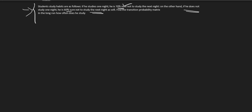Find the transition probability matrix — this is the first thing you have to find. Second, in the long run, how often does he study? Putting the transition probability matrix, that is TPM which is P, is important. Before writing the transition probability matrix, what are the state spaces of the system?